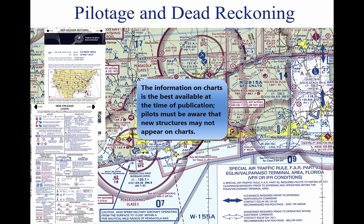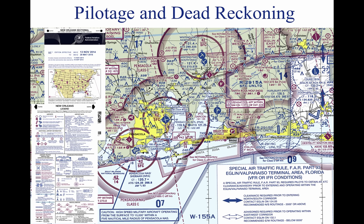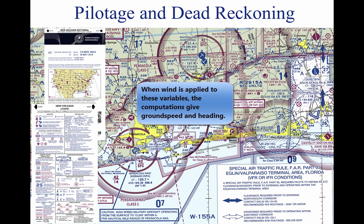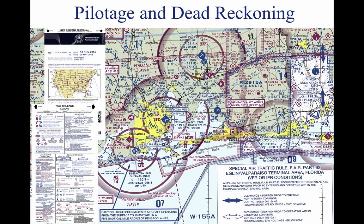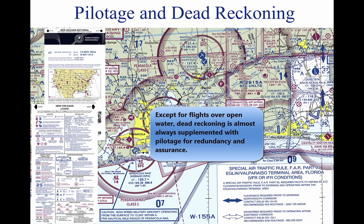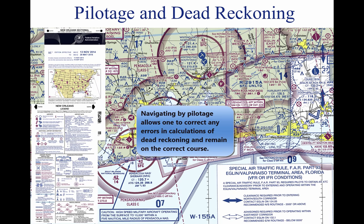Aeronautical charts display the best information available at the time of printing, but a pilot should be cautious of new structures or changes since the chart was printed. Dead Reckoning is navigation solely by means of computations based on time, airspeed, distance, and direction. The products derived, when adjusted by wind speed and velocity, are heading and ground speed. The predicted heading takes the aircraft along the intended path, and the GS establishes the time to arrive at each checkpoint and the destination. Except for flights over water, dead reckoning is usually used with pilotage for cross-country flying.